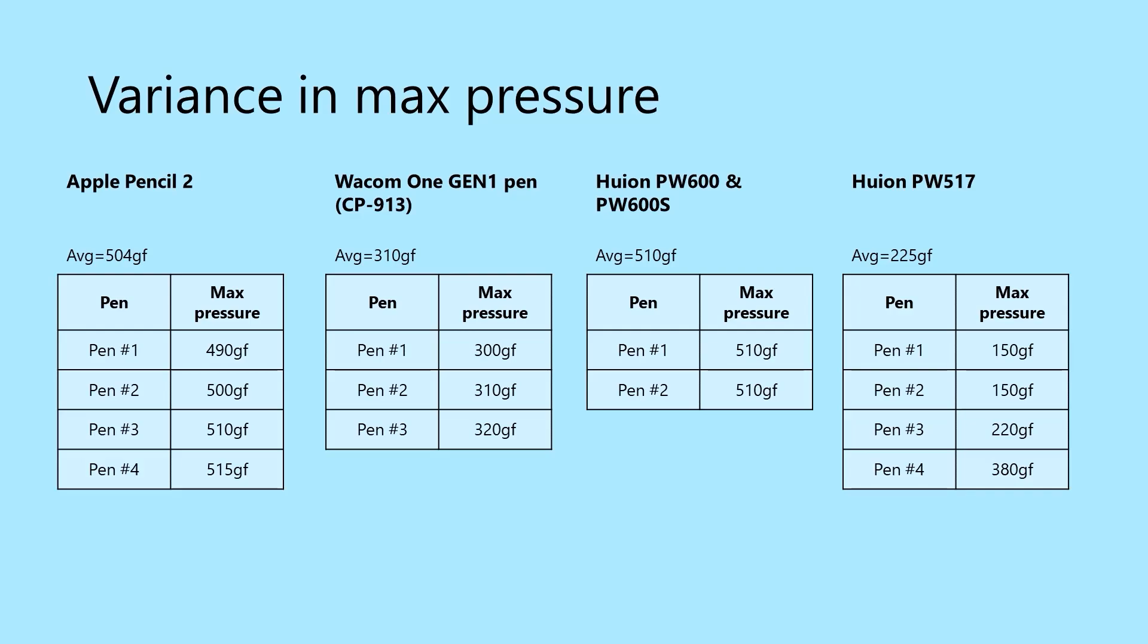I had four units of the Apple Pencil 2 and you can see they have different maximum pressure readings. This amount of variance is very typical. The Wacom 1 Gen 1 model pen, model number CP913, also has a very typical variance for maximum pressure.